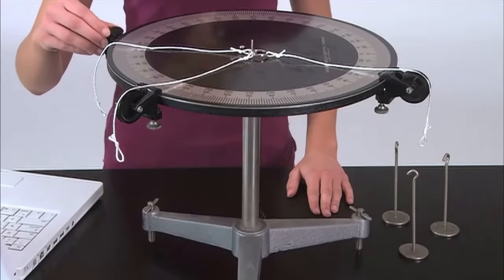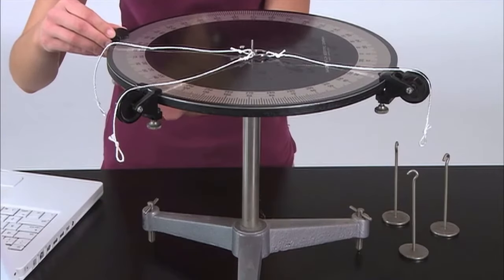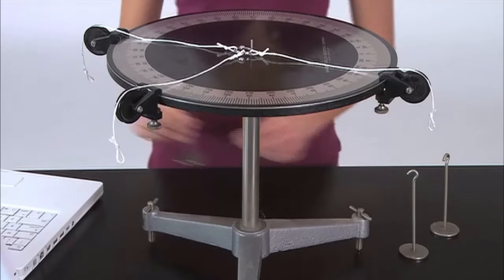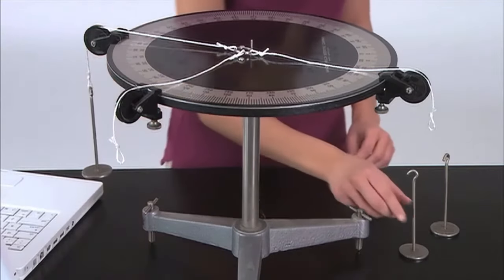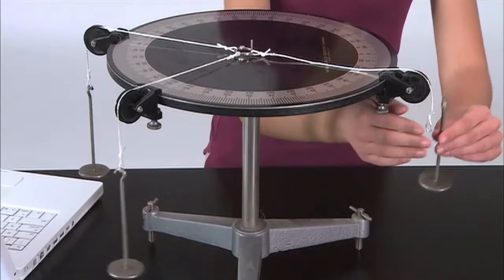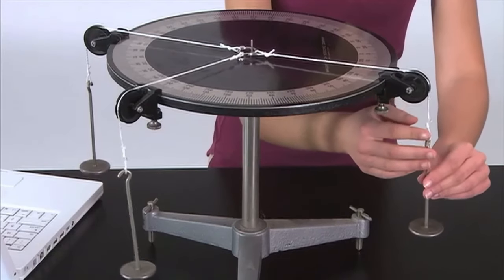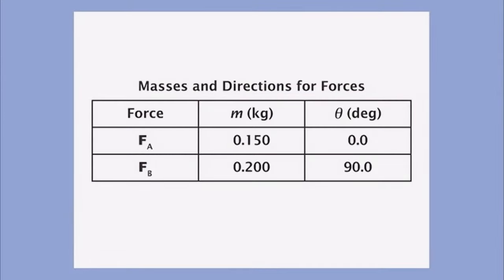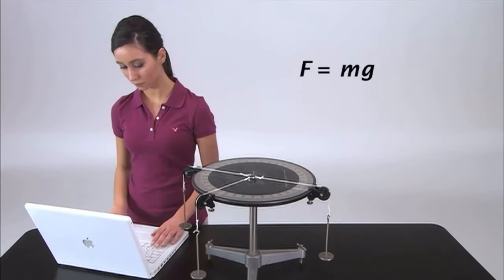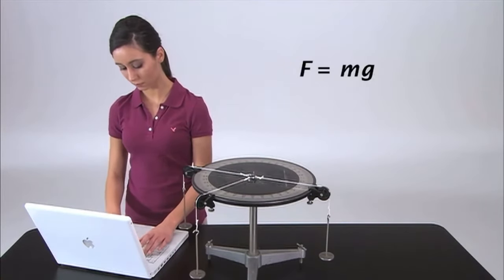Attach three pulleys to the force table and three strings to the ring. Hang a 50-gram mass hanger from each string. Label the pulleys and their associated hangers A, B, and E. The weights of masses hanging from the strings will exert forces on the ring in the directions of the pulleys. Record the masses and directions for the forces that will be applied by hangers A and B, and also record the value for the local gravitational acceleration.